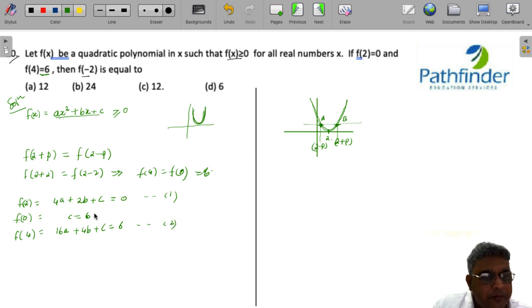So you have these three equations, 1, 2 and 3. You put the value of c as 6 in both these equations 1 and 3. So equation 1 will transform as 4a plus 2b is equal to -6 and equation 2 will transform as 16 times a plus 4 times b must be equal to 0.